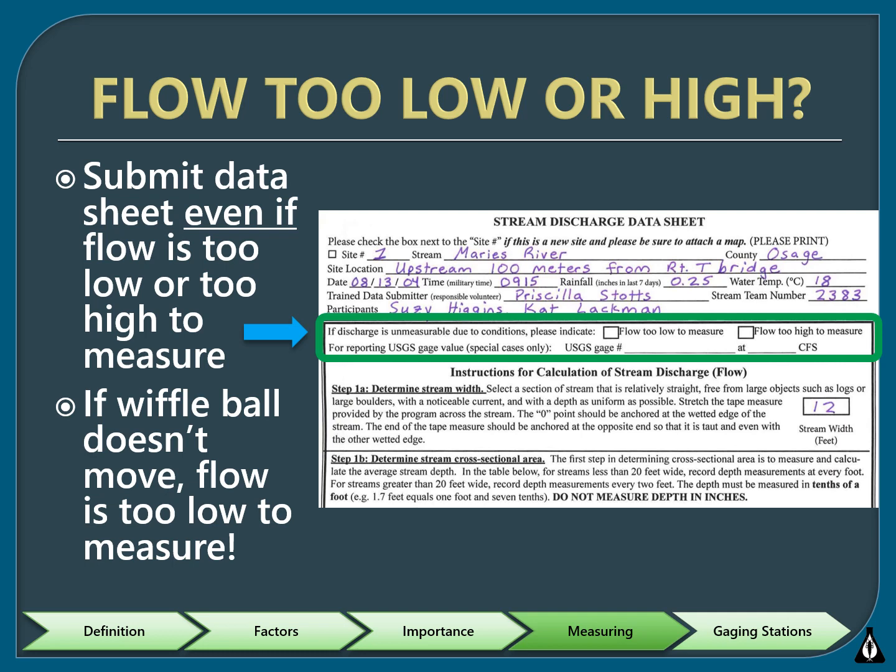The first section of this data sheet is a place to indicate if the stream flow is too high or too low to measure. If the flow is swift or if the depth is above your knees, please indicate stream flow is too high to measure. If there is no observable flow or if it's too shallow, you can indicate stream flow is too low. If your stream site is within one half mile of a USGS gauging station with no inputs or outputs, you can simply report the discharge data from that station. If you select too high, too low, or report USGS flow data, your data sheet is complete and you will not need to fill out any other fields.